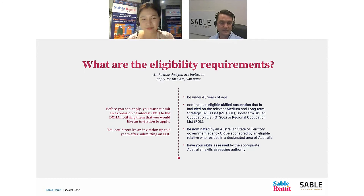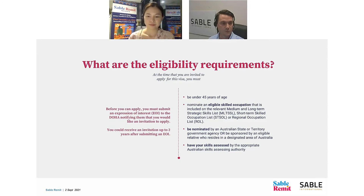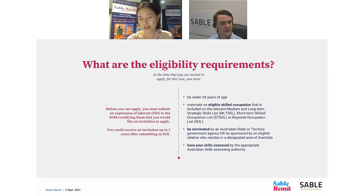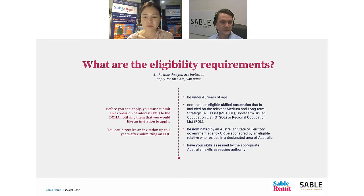South Australia's list of who they're looking for is quite broad. But you need to go to the state government's website and drill down to find out exactly what their criteria is, because all state governments have different criteria. They determine what they require from you in order to be nominated by them. With South Australia specifically, they are looking for people who are currently living and working in South Australia in their nominated occupation. So at this point in time, you need to be in South Australia to be nominated — they won't consider you if you're offshore.